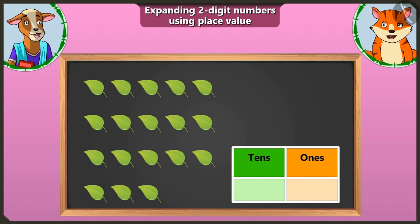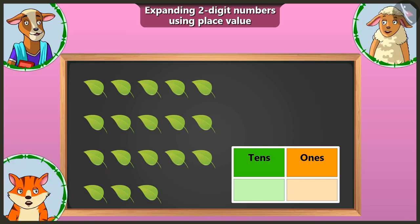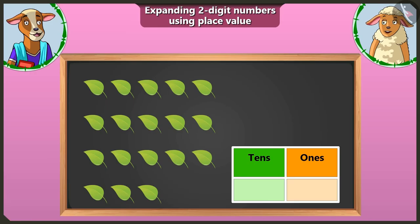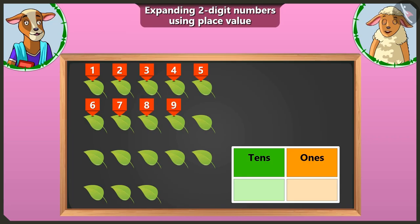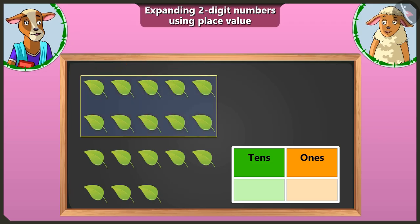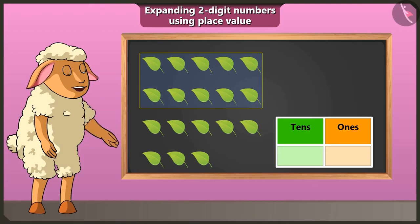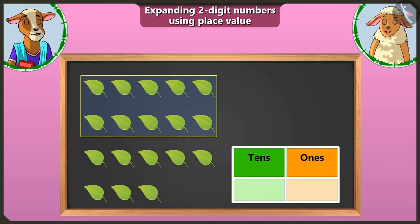Now look, there are some leaves here. Who will make their groups and write it? I will write. Alright, both of you do it one by one. First, I will make a group of ten leaves. One, two, three, four, five, six, seven, eight, nine and ten. I have made a group of ten. Now there is one group of tens here, so we will write one in the tens box.